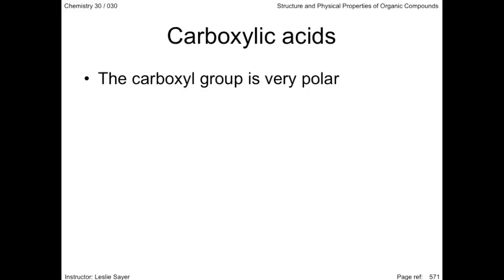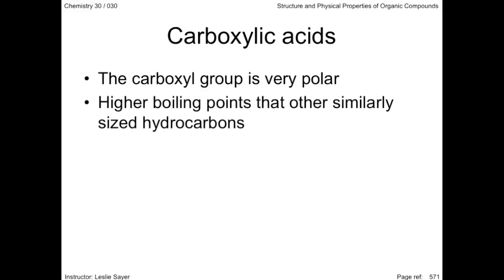The physical properties of carboxylic acids are based around their very polar functional group. This polarity enables hydrogen bonding between other molecules, giving them a higher boiling point than that of alcohols with the same number of carbons. Short-chain acids are liquid at room temperature and are miscible with water, but the longer-chain carboxylic acids are waxy solids, and like the longer-chain alcohols, they are far less water soluble.